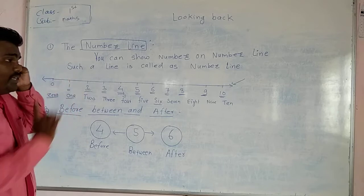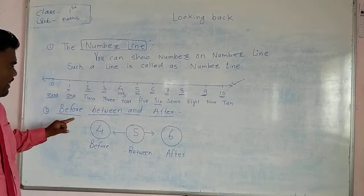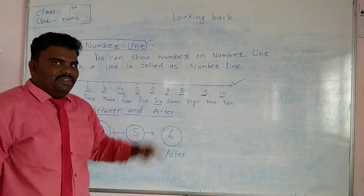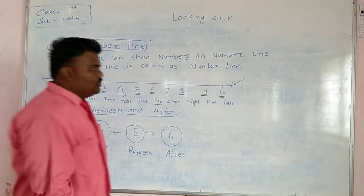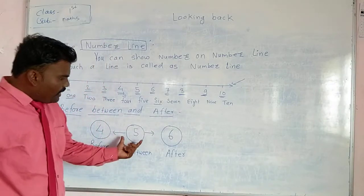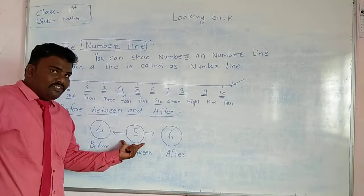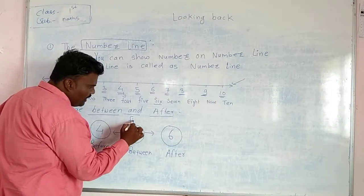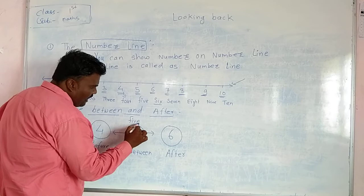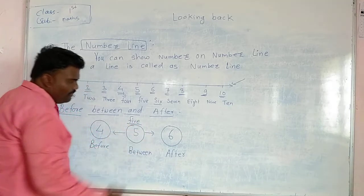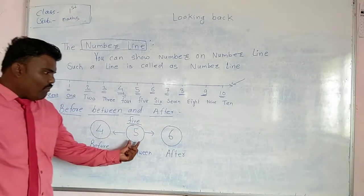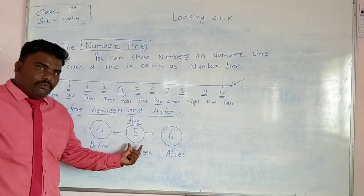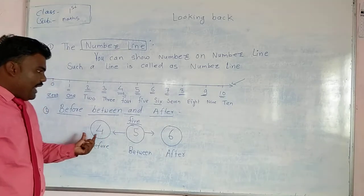So it is said to be a number line. And let's talk about before, between and after. Dear students, look at me. This is 5. What is this? This is 5. What is the spelling of 5? F-I-V-E, 5. So before 5 we write 4. Correct, before 5 we write 4.